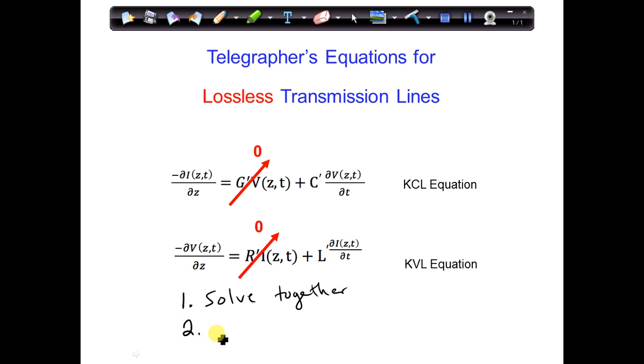Another option is that we can combine the two telegrapher's equations into one equation. In that case, we'd have one unknown, one equation, and one unknown. And the equation turns out to be a wave equation, which we can solve analytically.